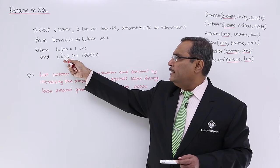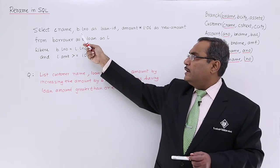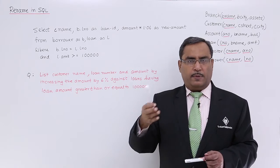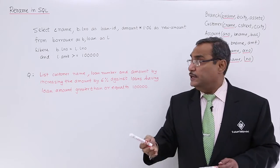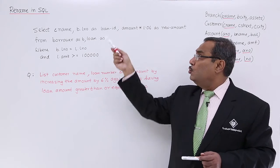As in the condition, we are writing this B dot LNO is equal to L dot LNO. Here you can write either B dot LNO or L dot LNO, both will create the same output, both will give the same listing. And this particular output has been renamed to loan ID.